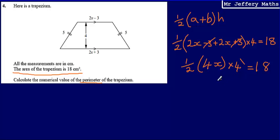2x multiplied by 4 would give me 8x, and that is equal to 18. Next thing I'm going to do is figure out what x will be.